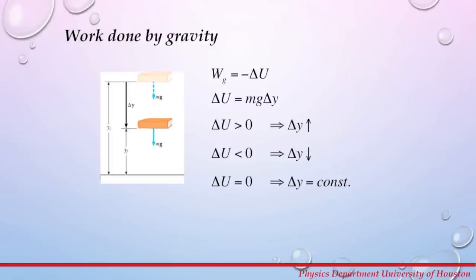This relationship shows that an object gains potential energy if height increases, and loses potential energy if height decreases. So if Δy decreases, ΔU will be less than zero. If the book is sitting on the surface of the table, Δy is not changing, so the change in potential energy equals zero.